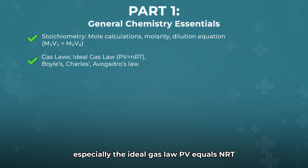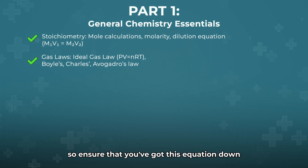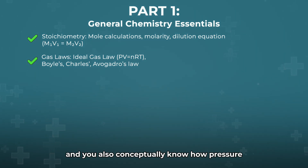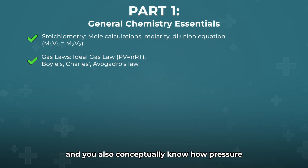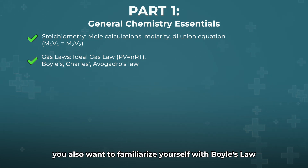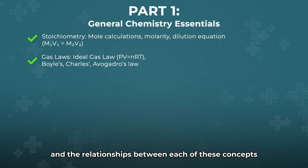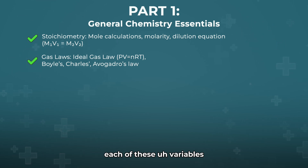Gas laws, especially the ideal gas law — PV equals nRT — are super important. It shows up quite a bit, so make sure you've got this equation down and you also conceptually know how pressure, volume, temperature, and moles are related to each other. You also want to familiarize yourself with Boyle's law, Charles' law, and Avogadro's law, and the relationships between each of these variables.